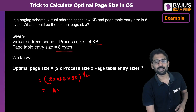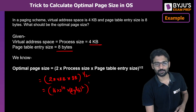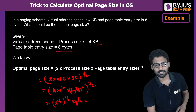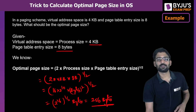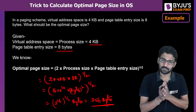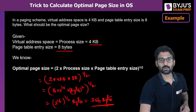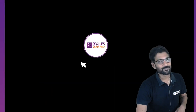This becomes √(16 × 2^10 × bytes²), which equals √(2^16 bytes²) = 2^8 bytes = 256 bytes. So it becomes a simple substitution once you know the formula. Just remember this formula for optimal page size — that is today's trick.